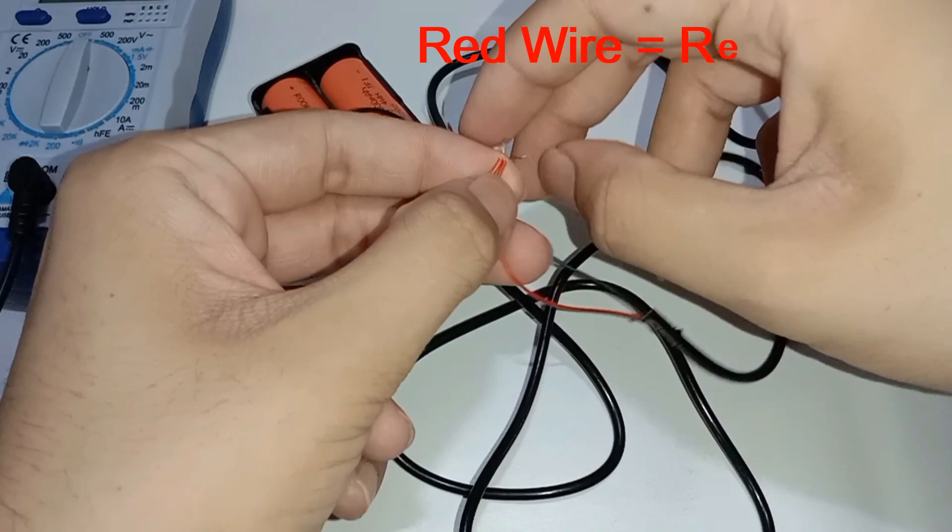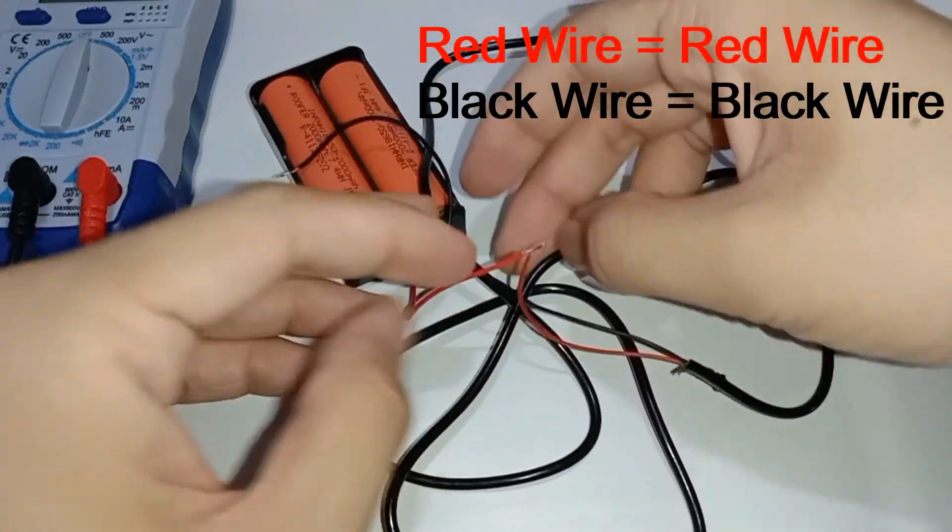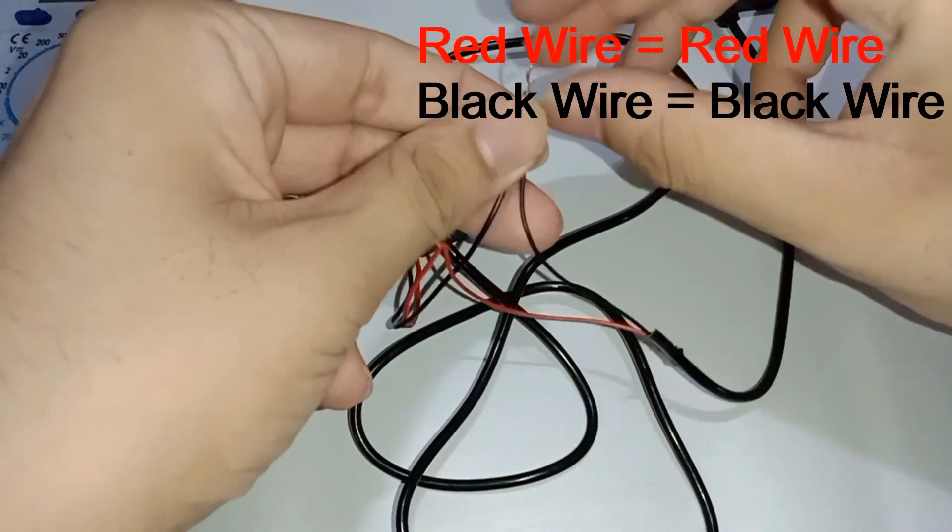Now, we have to connect red wire of the charger with red wire of the holder and black wire of the charger with black wire of the holder.